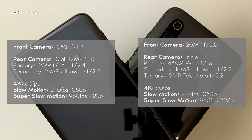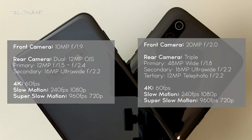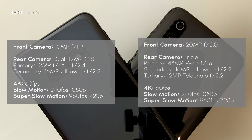For video recording, the Galaxy S10e and the Mi 9 can record videos at 60fps for both 1080p and 4K. For slow motion videos, both phones can record 240fps at 1080p and 960fps at 720p.